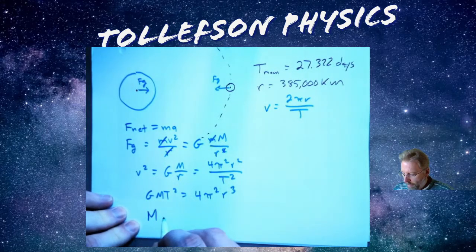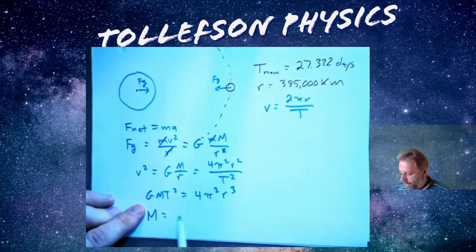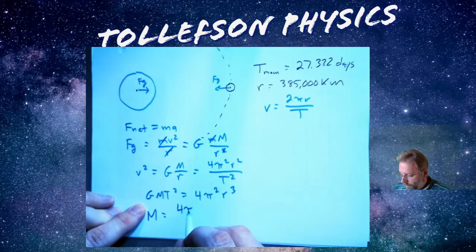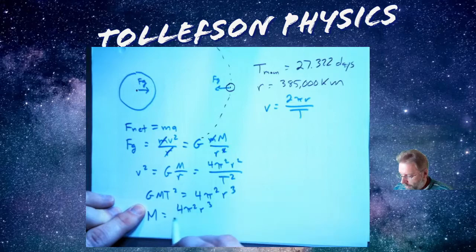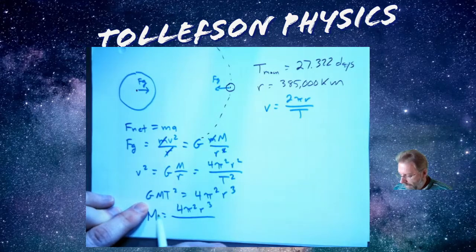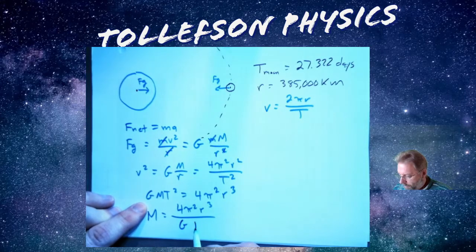Just make sure you're careful with your algebra as you're bringing this forward and then I just want to solve for the mass. Right and so I can do that. So if I look at the mass of the earth is what I want to know, that's going to be 4π² times r³ divided by Gt².